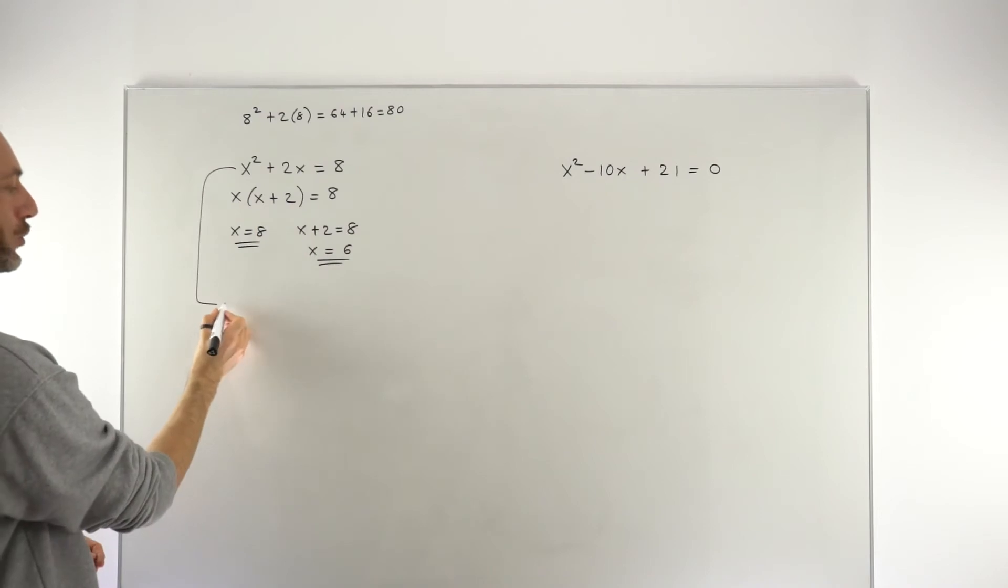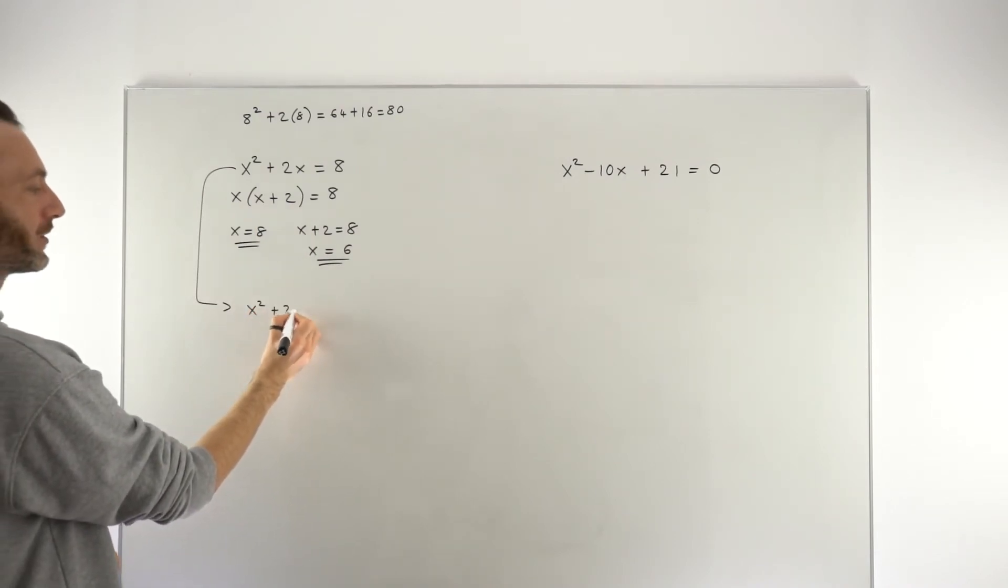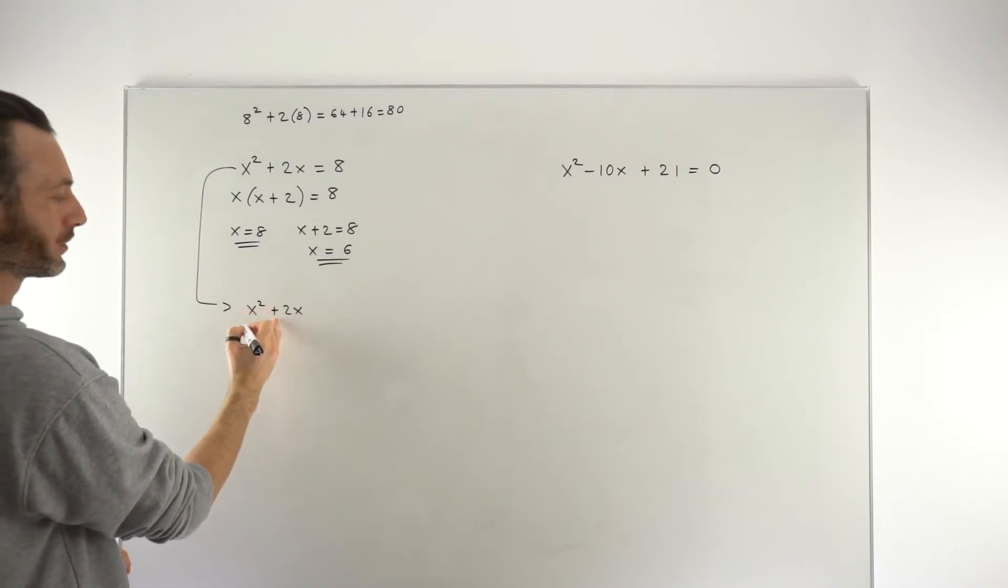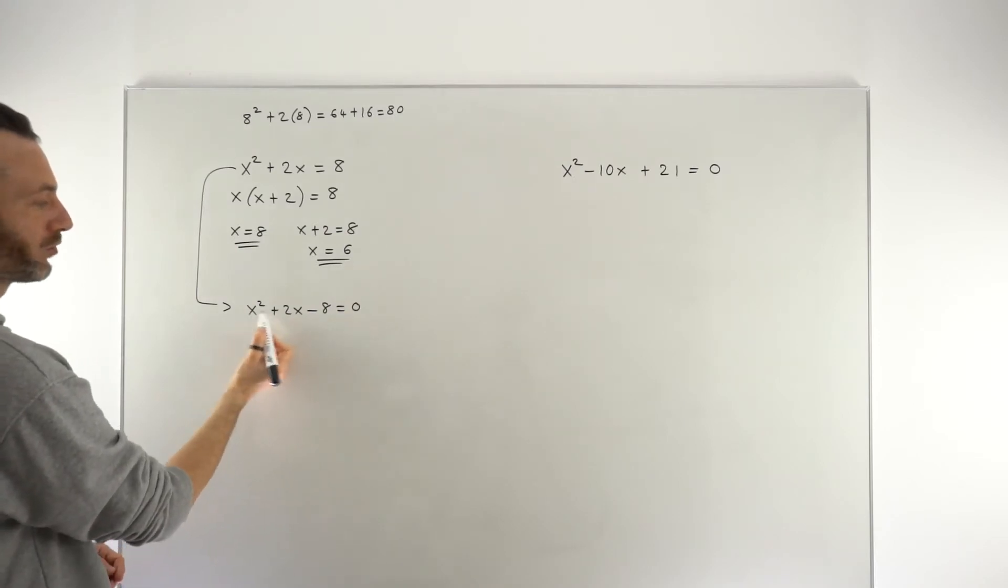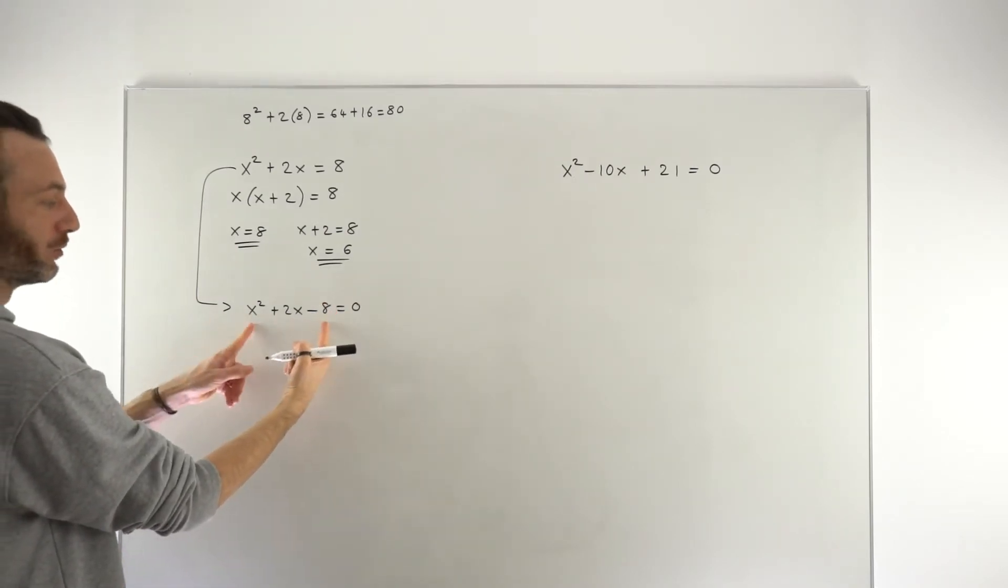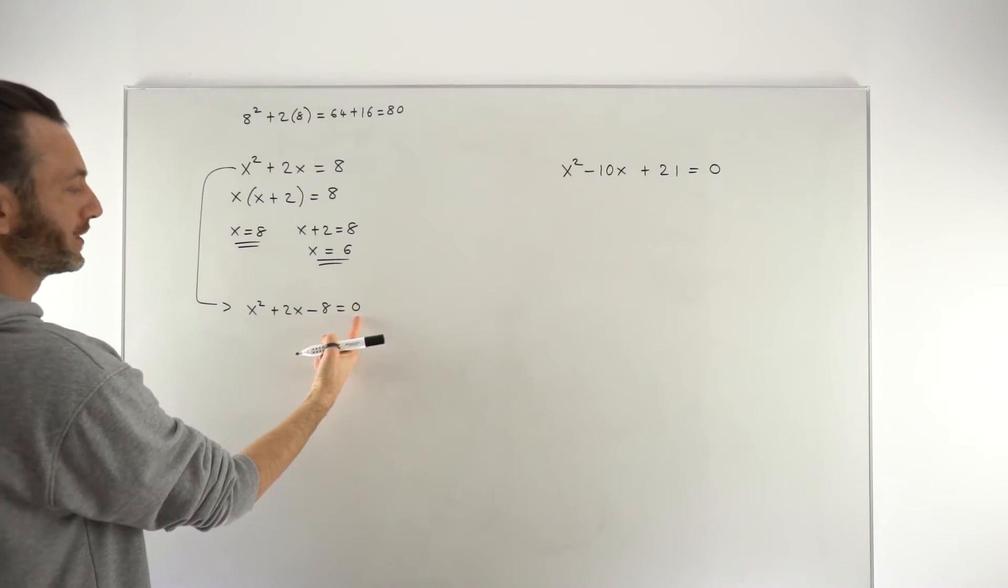So let's take a look at what we should have done. We should have started by subtracting 8 from both sides to make the equation x squared plus 2x minus 8 equals 0. In other words making it into a quadratic expression, a trinomial in this case, equal to 0.